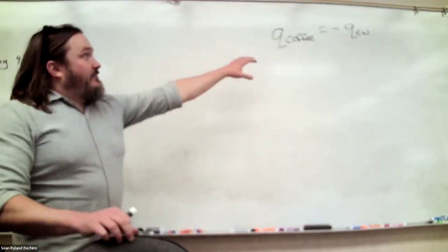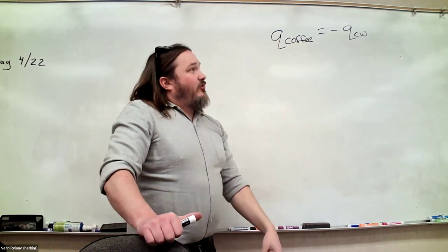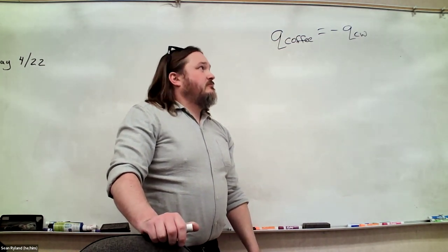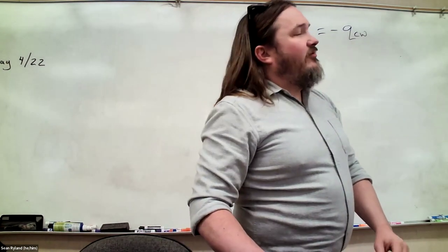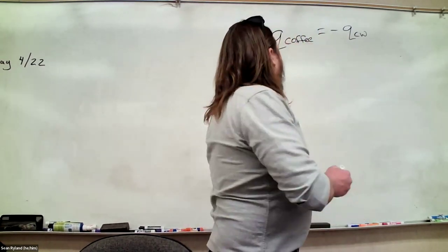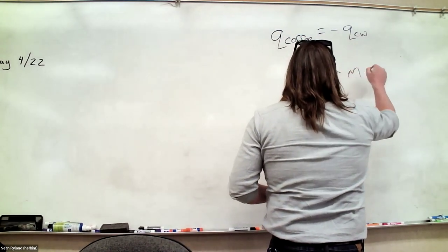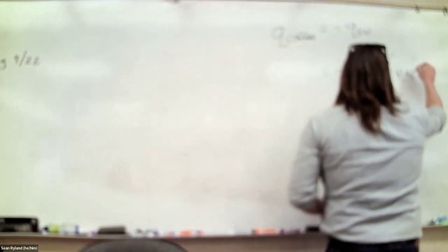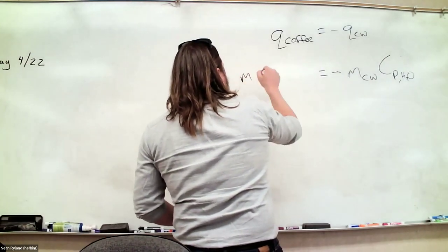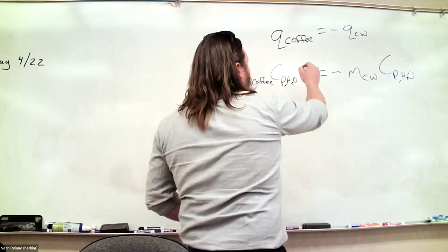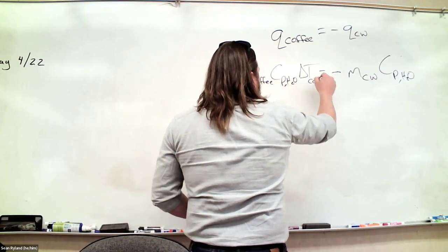We know this relationship has to be true. What are we solving for? The question asks how many milliliters of room temperature water — if we can get to mass of cold water, that's good enough. We know the specific heat of cold water, mass of coffee, specific heat of coffee (which we're assuming is the same as water), delta T for the coffee, and delta T for the cold water.